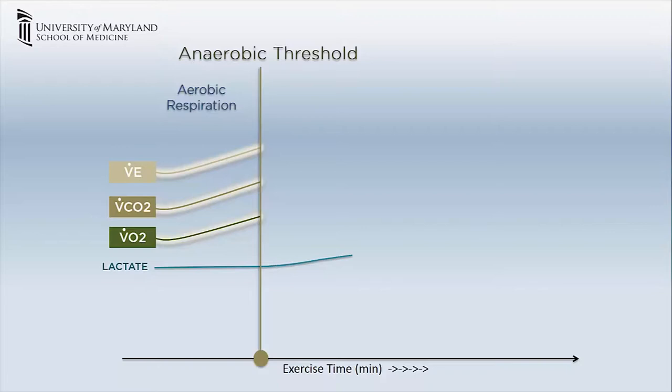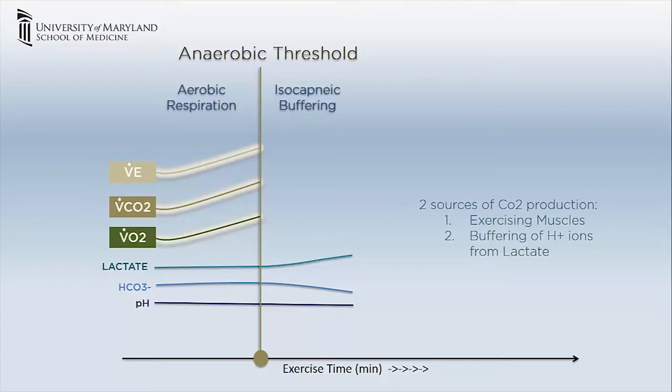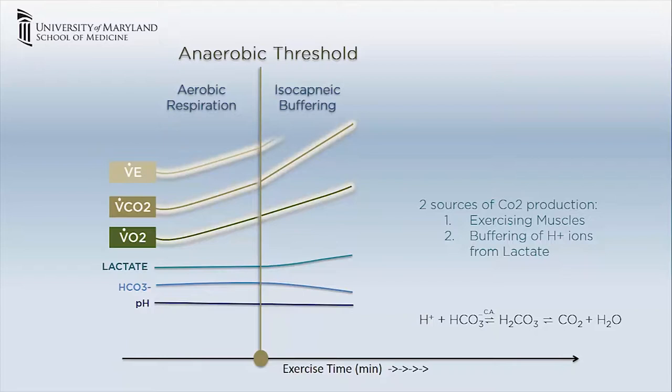At this stage, there are two sources of carbon dioxide production: one from the exercising muscles, and the other from buffering of H+ ions from lactate by bicarbonate. Hence, the carbon dioxide production increases out of proportion to oxygen consumption. To compensate for this, the minute ventilation also increases out of proportion to oxygen consumption. It is important to note that minute ventilation is still proportionate to the carbon dioxide production.